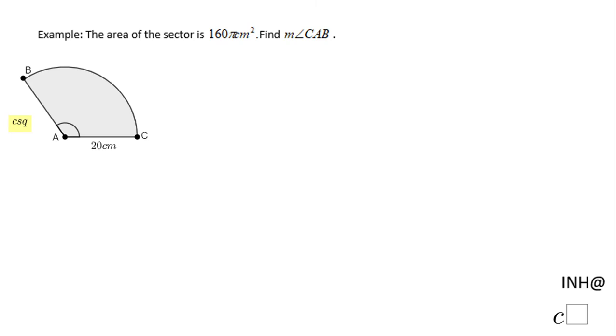Welcome or welcome back at I Need Help at Cisco. In this example we have the area of this sector being 160π and we need to find the measure of this angle. We also know the radius of this circle is 20 centimeters because this sector is part of the circle.